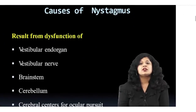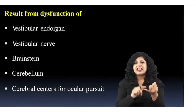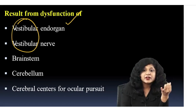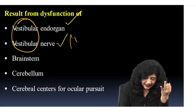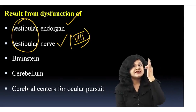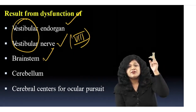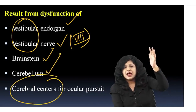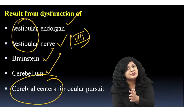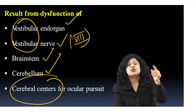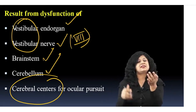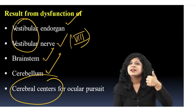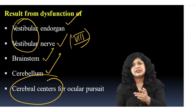Causes of nystagmus: it can be vestibular — the end organ, the vestibular nerve (eighth nerve), its center (brainstem), cerebellum, or cerebral centers. Problems at any of these places — vestibular end organ, vestibular nerve, brainstem, cerebellum, or cerebral centers — can lead to nystagmus.